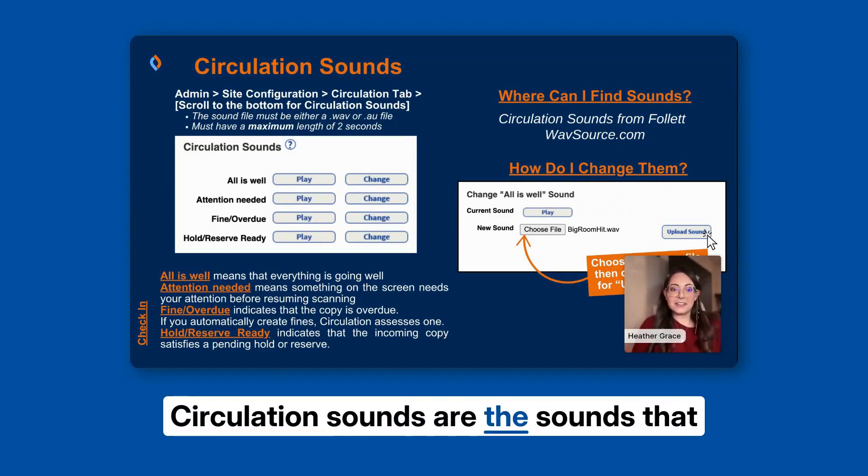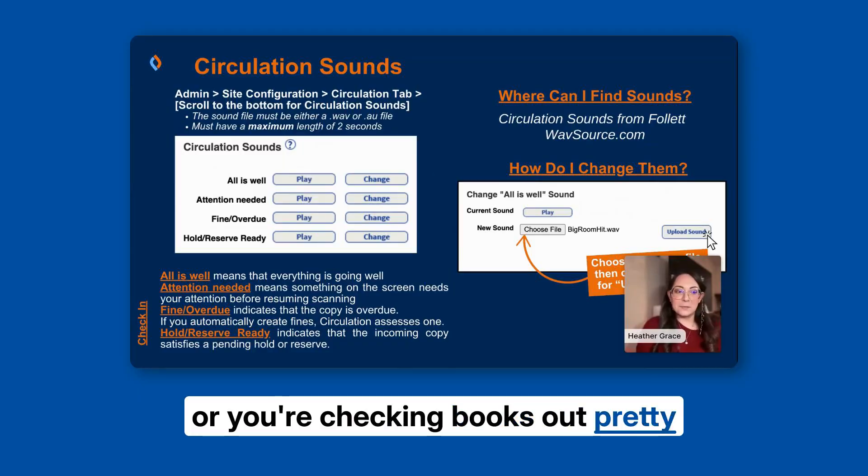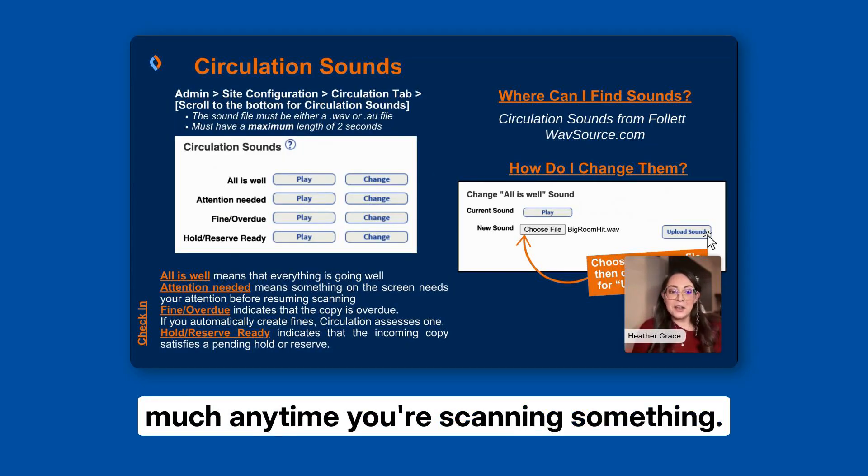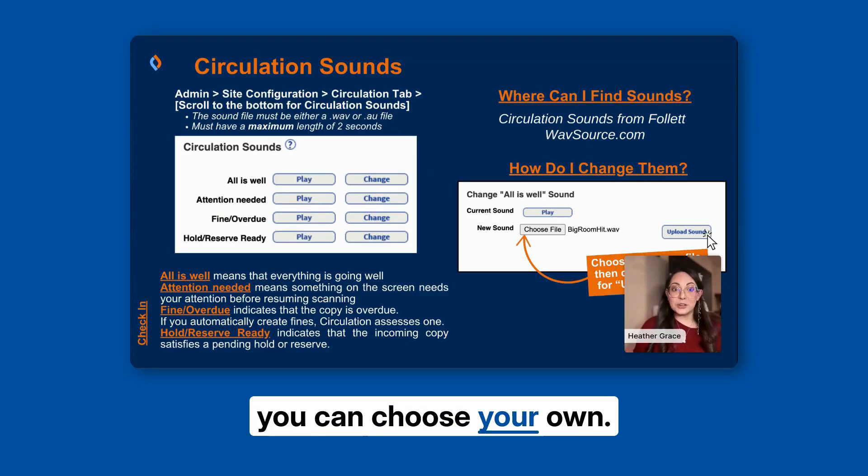Circulation sounds are the sounds that you hear when you're checking books in or out, pretty much anytime you're scanning something. When it comes to circulation sounds, you can choose your own.